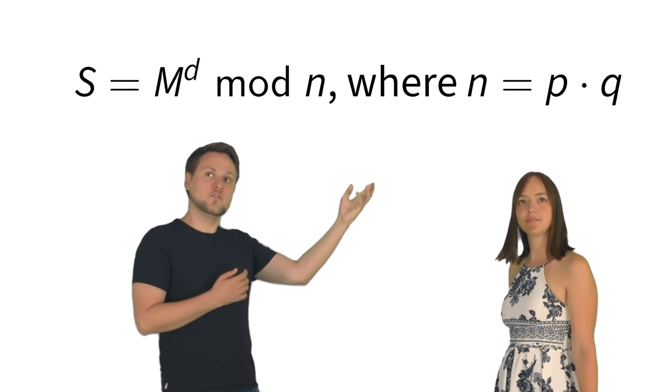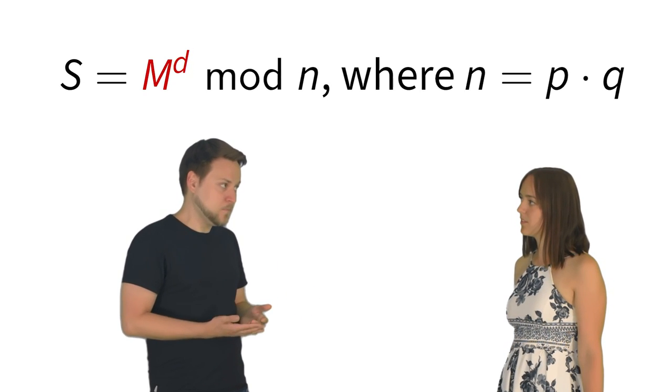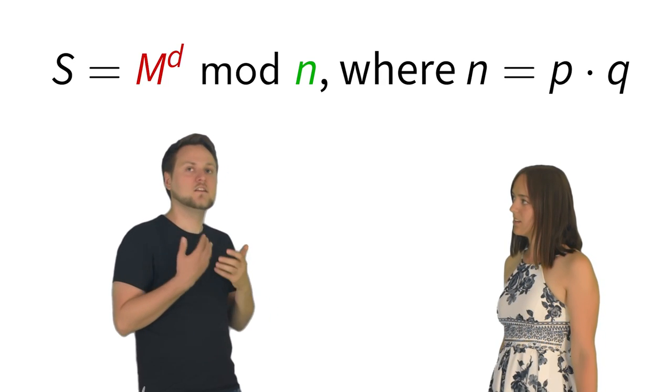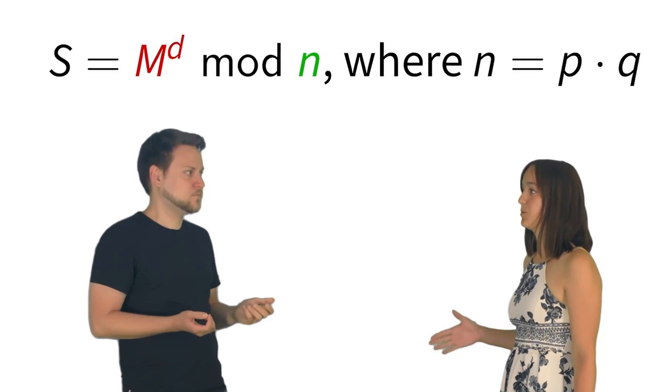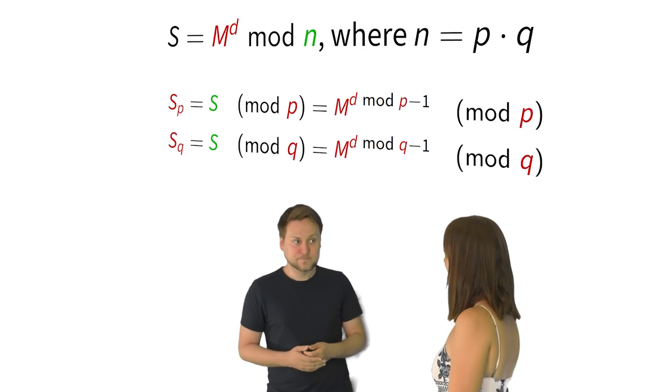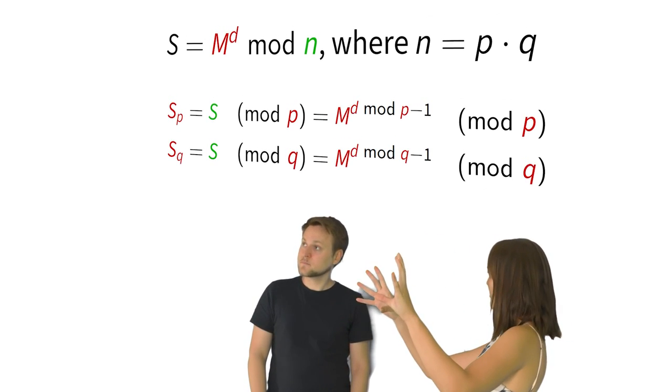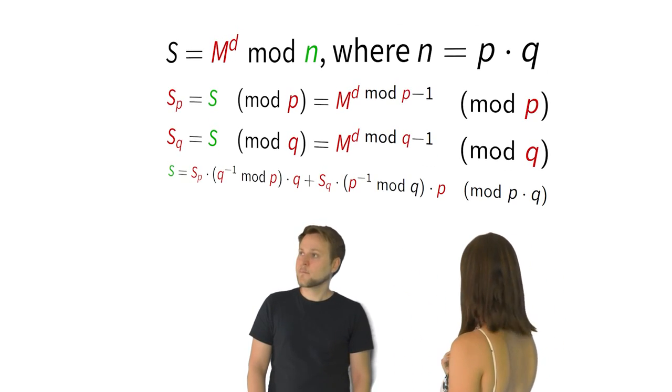And here we see the signature formula for performing an RSA signature with the private message M, the private exponent D and the public modulus N. So basically a modular exponentiation. Yeah, but the exponent D is really, really big. Yes. Fortunately, there's the Chinese remainder theorem. Right. So they split the exponentiation into two smaller ones and with some mathematical tricks get to the same result modular N.